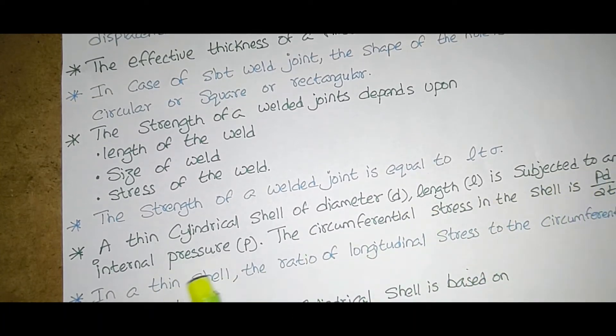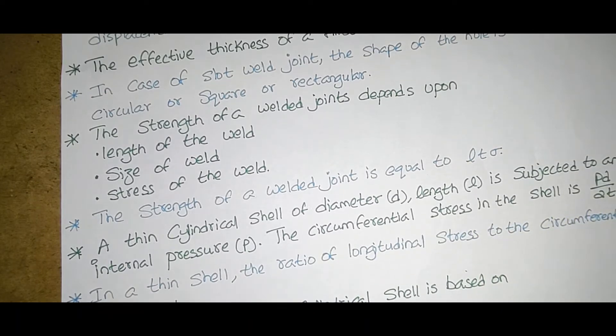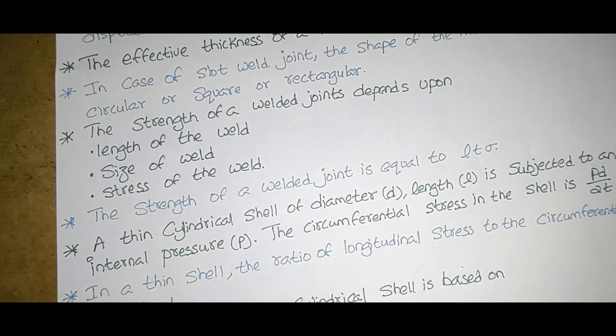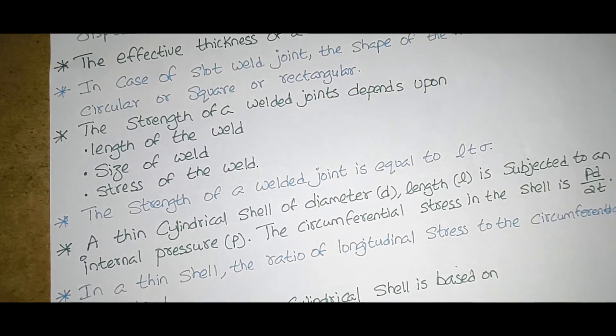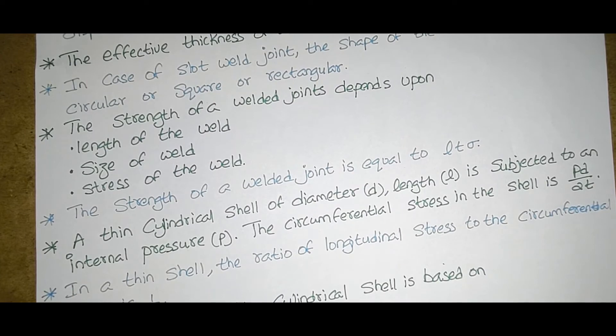A thin cylindrical shell of diameter D length L is subjected to an internal pressure P. The circumferential stress in the shell is PD by 2T.